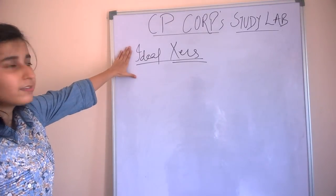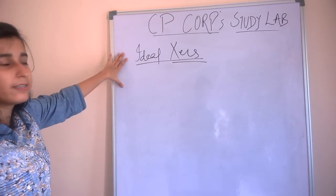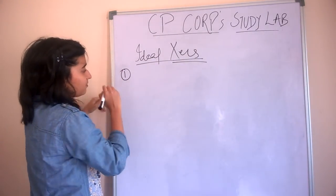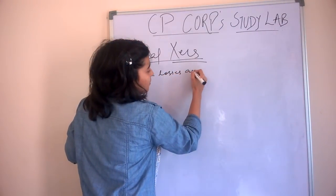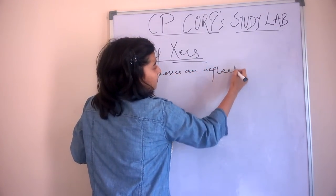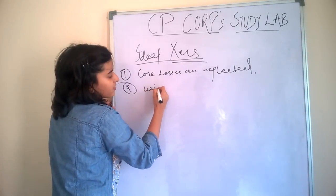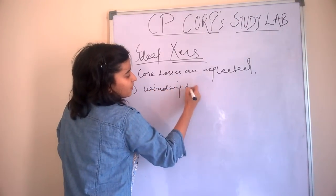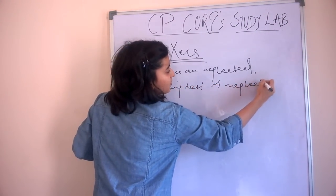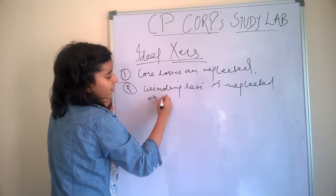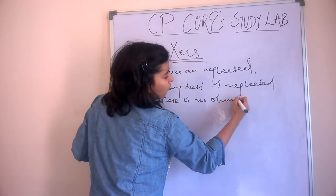We are going to study about transformers. First, we will study the assumptions of an ideal transformer. First, four losses are neglected. Second, winding resistance is neglected, means there is no ohmic losses.